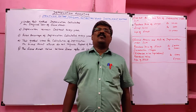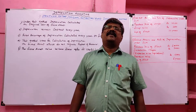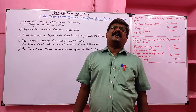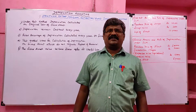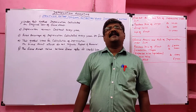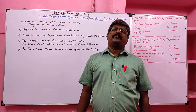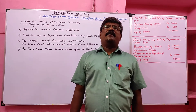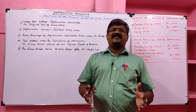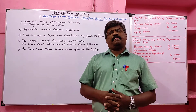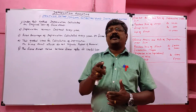Students, today we are going to learn about one of the methods of depreciation called the Straight Line Method. Under this method, depreciation is calculated on the original cost — that is, the purchase price of a fixed asset plus installation charges plus freight charges. Under this method, depreciation remains constant, and a fixed percentage is charged on the fixed asset every year. After the useful life of the fixed asset, the asset value becomes zero.